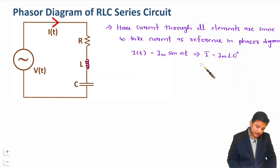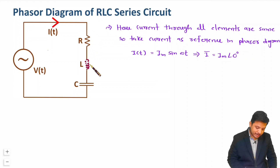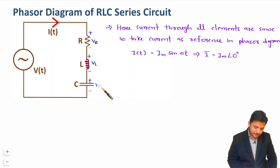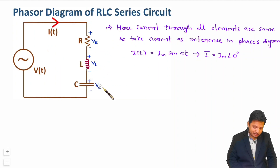Now let us understand what happens inside the circuit. This current I passes through all three elements. Across the resistance, the voltage is VR; across the inductance, the voltage is VL; and across the capacitance, the voltage is VC. Let us identify the values of VR, VL, and VC.